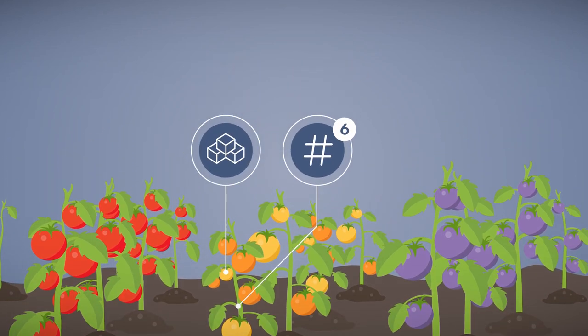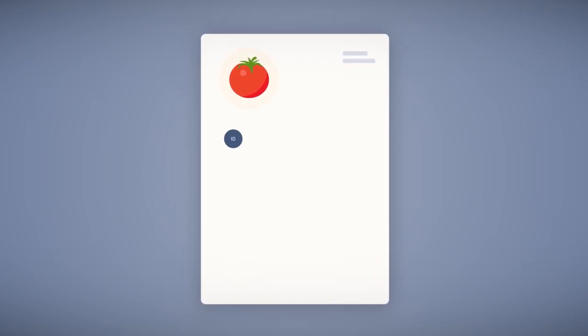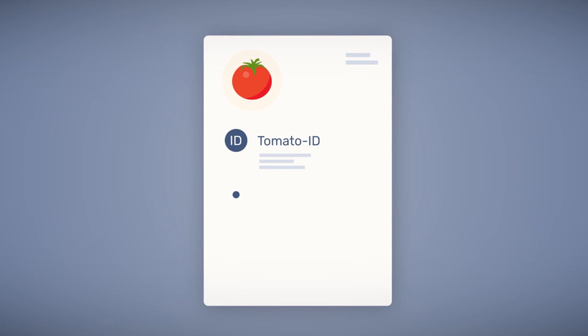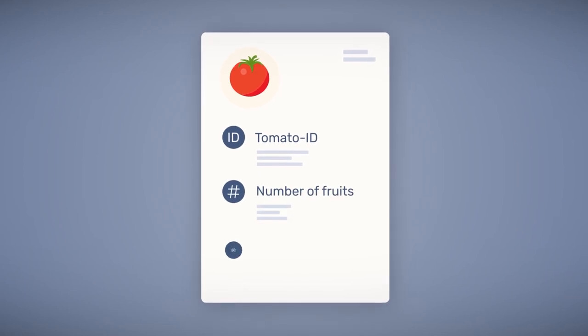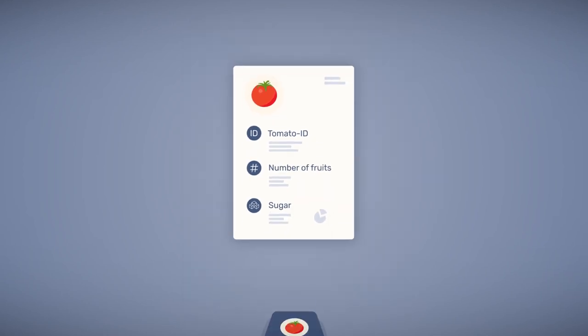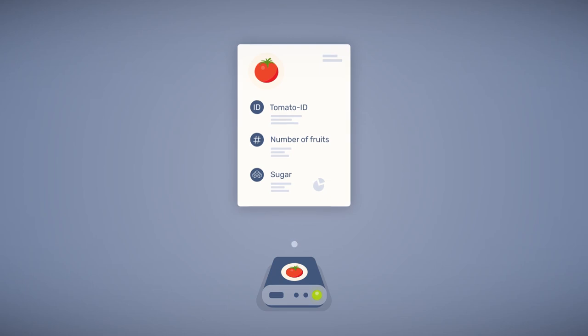Jill now defines the first data model representing her tomato measurements. The attributes in this data model are tomato ID, number of fruits and the sugar content. Jill stores her data in her own tomato database.